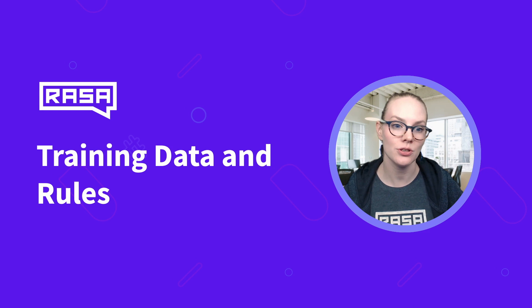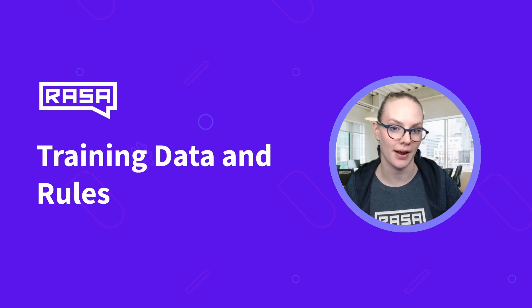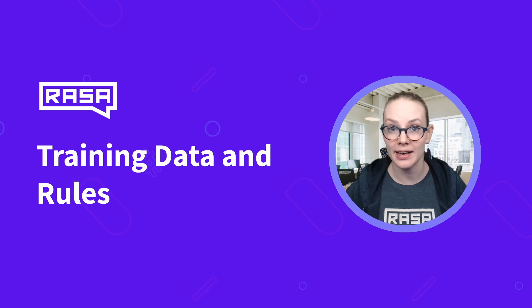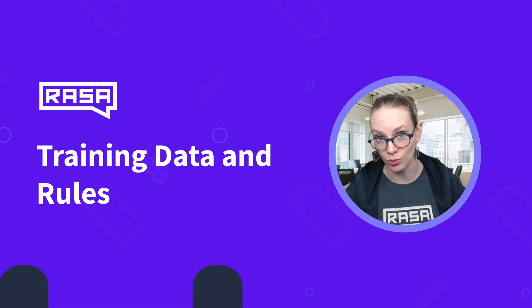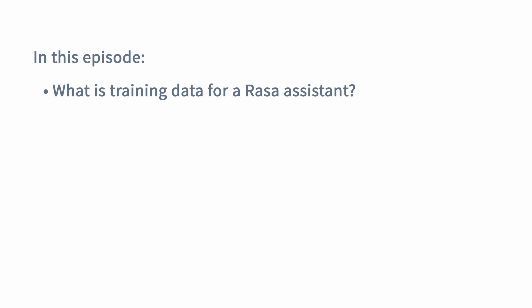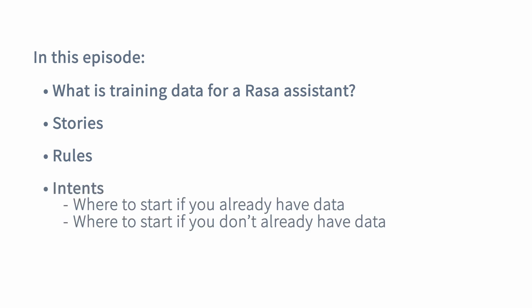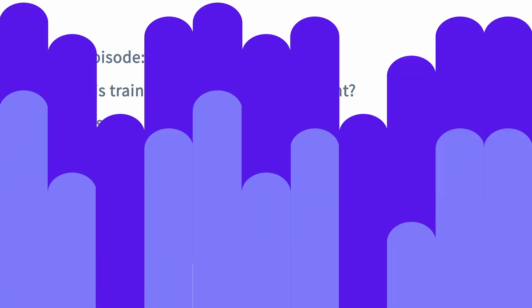The ways that you do this are by providing training data and rules. We're going to start by talking about what training data is for a RASA assistant, then providing information about how conversations should go using stories and rules, and finally providing examples of how people tend to say things using intents.